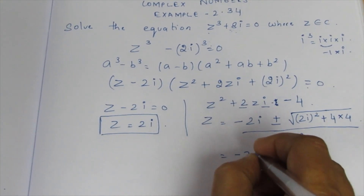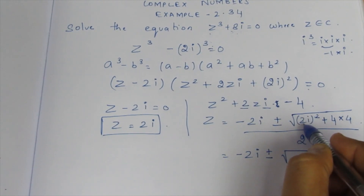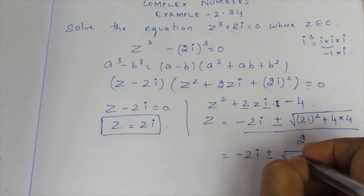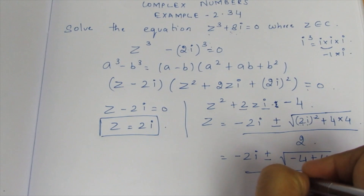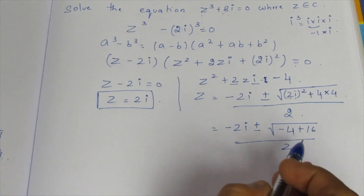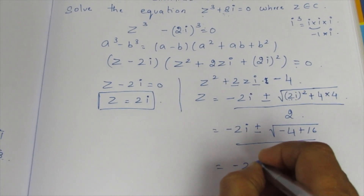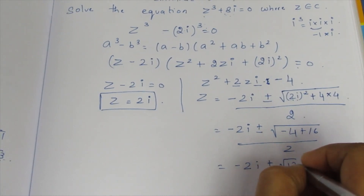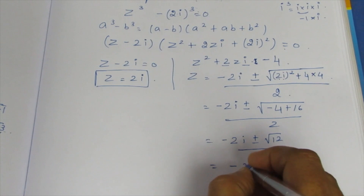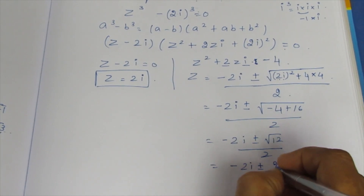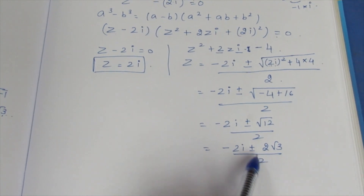Z = (-2i ± √(4i² - 4 + 16)) / 2 = (-2i ± √(-4 - 4 + 16)) / 2 = (-2i ± √12) / 2. Since √12 = 2√3, this becomes (-2i ± 2√3) / 2, and the 2 cancels.